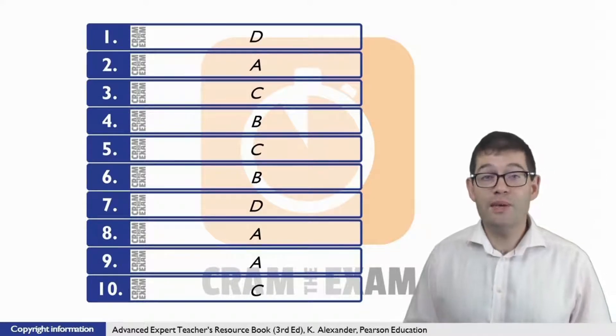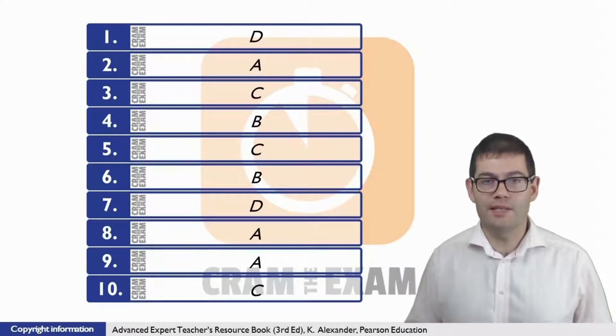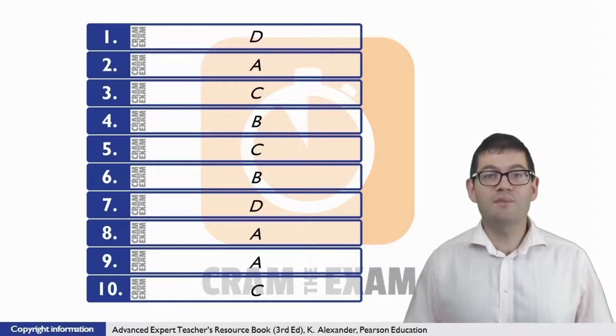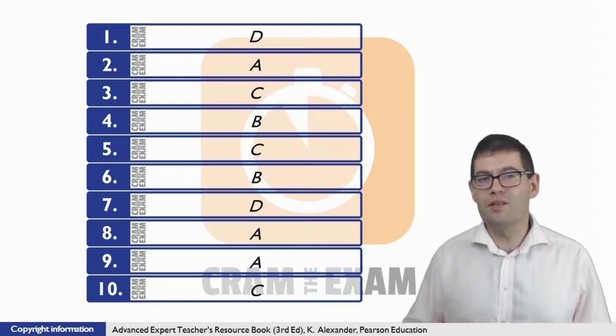For question 6, the answer is B. Kim and Jason feel disappointed about how their previous jobs turned out. The disappointment can be seen one third of the way down in B where it says, I'd got rather disillusioned with the world of finance.